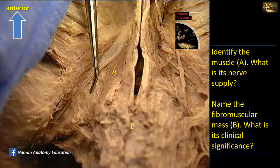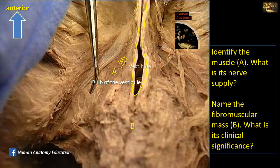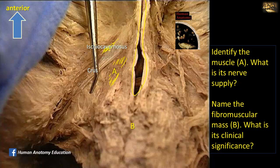Identify the muscle A. What is its nerve supply? To be oriented, this is the urogenital triangle of a female pelvis. These are the labia minora, and in between them is the vestibule. On the side of the vestibule is the bulb of the vestibule, and the bulb is covered by muscle fibers which form the bulbospongiosus muscle. Here is the crus of the clitoris covered by the ischiocavernosus muscle. Both these muscles — the bulbospongiosus and ischiocavernosus — are supplied by muscular branches from the pudendal nerve.